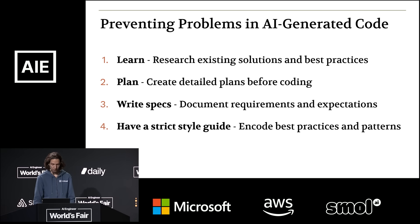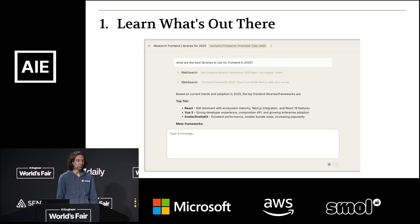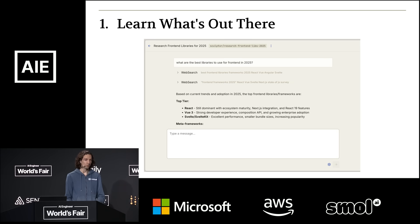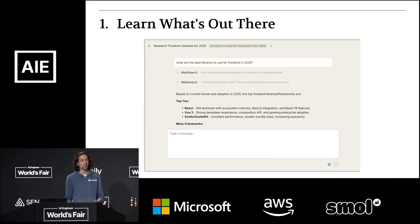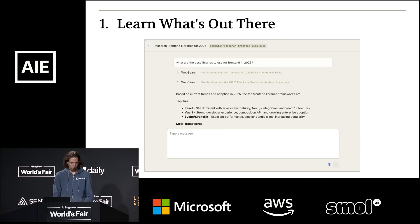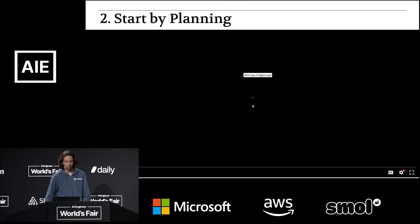The first thing you want to do when using coding agents to prevent problems is learn what's out there. We try to make this as easy as possible in Sculptor by letting you ask questions, have it do research, and get answers about what technologies exist and how other people have solved similar problems — so you don't end up reproducing work that's already been done.